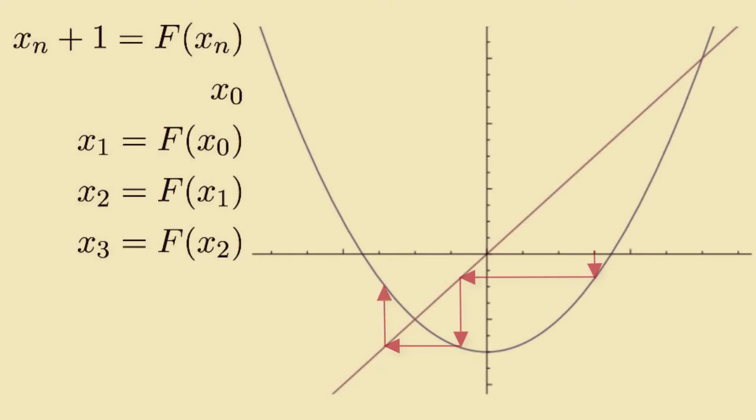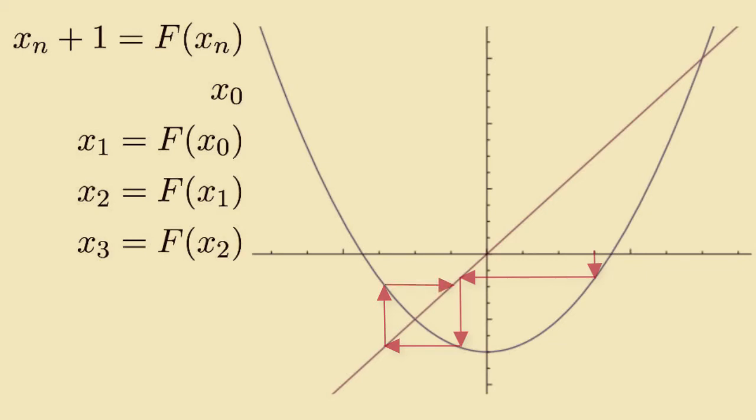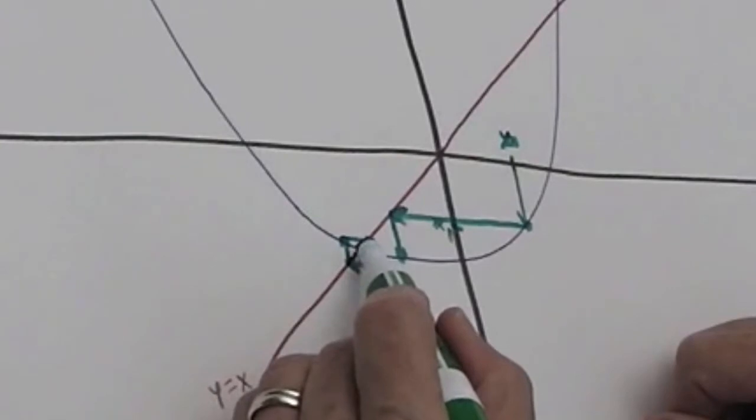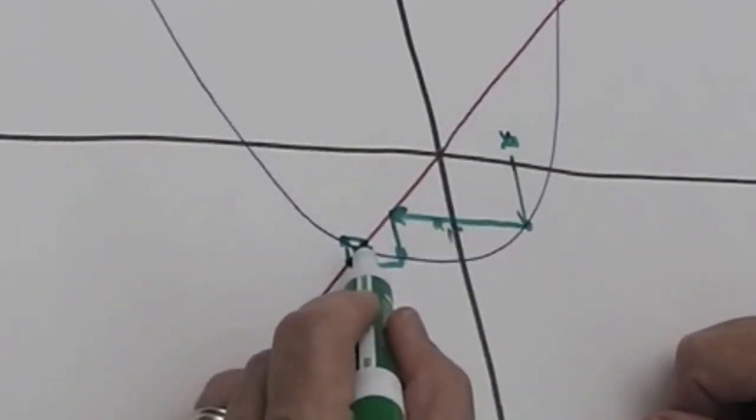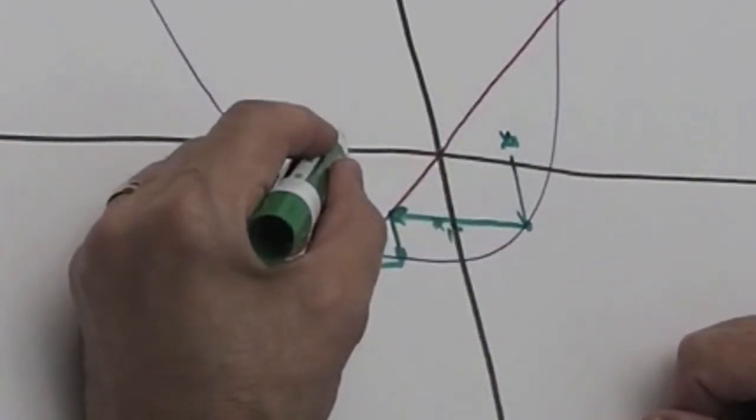Then we interchange the output for the input by moving to y = x. You can see that this cobweb plot is spiraling in on this particular point, which is a fixed point of the DDS because it's where the graph of f crosses the line y = x. That's one example.